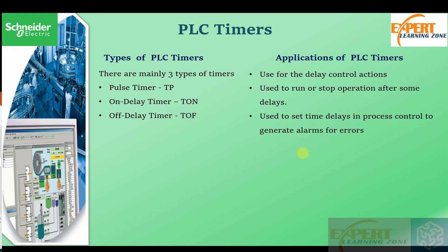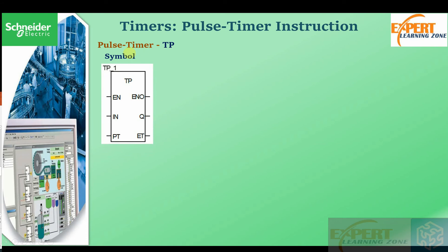We will start with the first type of timer, the pulse timer called TP. This is the symbol for the pulse timer. Like mentioned in an earlier tutorial, every function block has the enable and error notification parameters. Pulse timers also have different parameters: the input parameter used to start the timer, the preset time which determines how long the timer will run, the elapsed or internal time which progressively counts the timer, and the output which indicates whether the preset time has been reached.